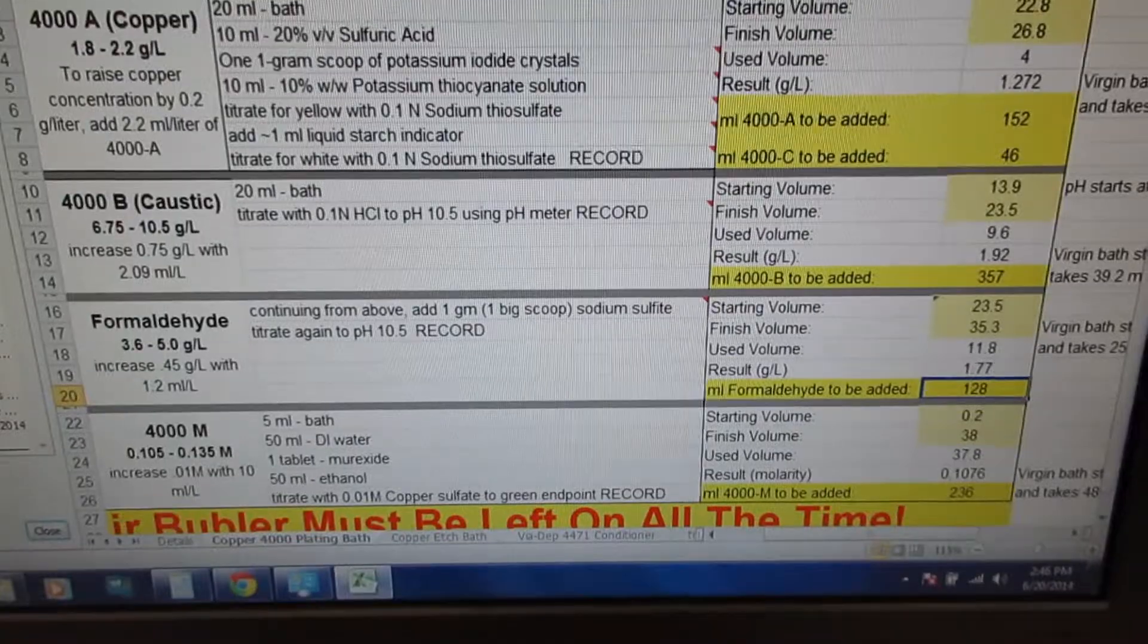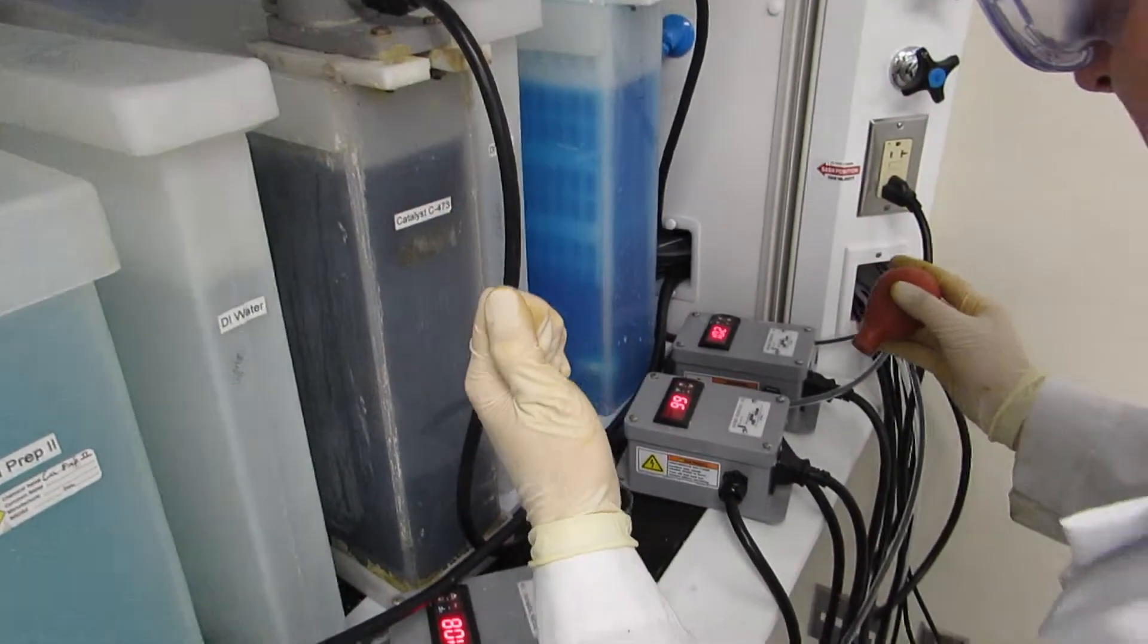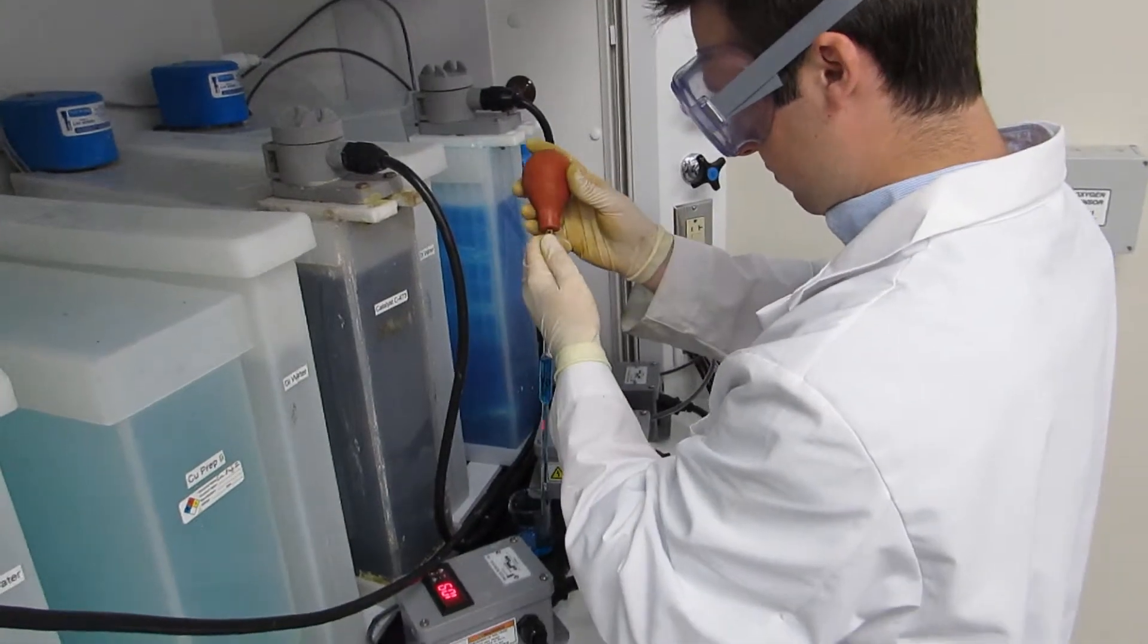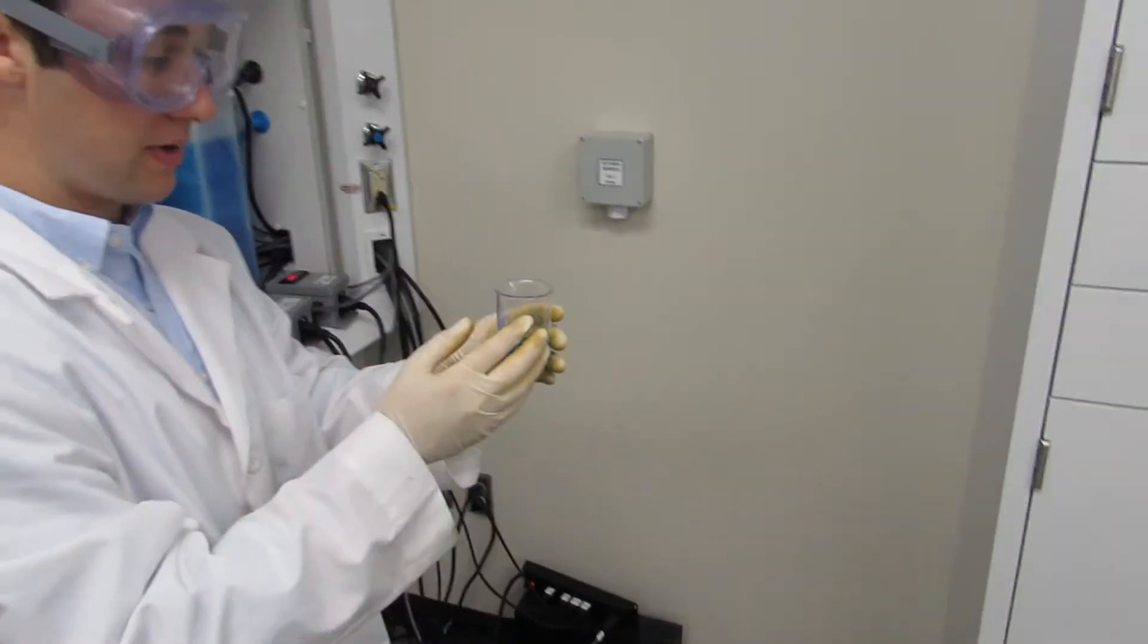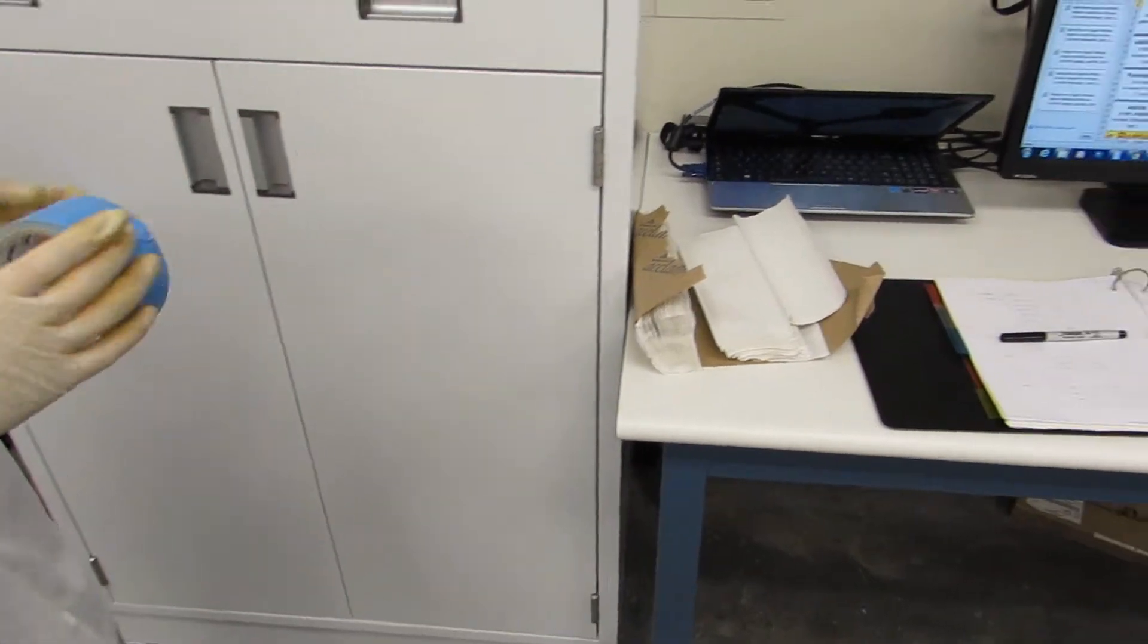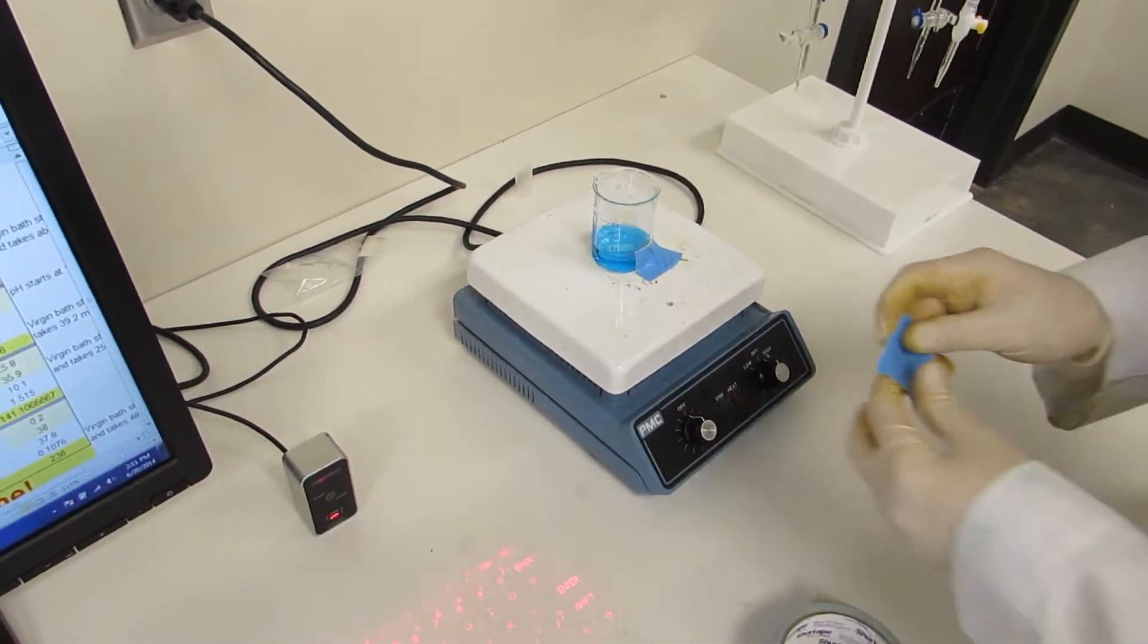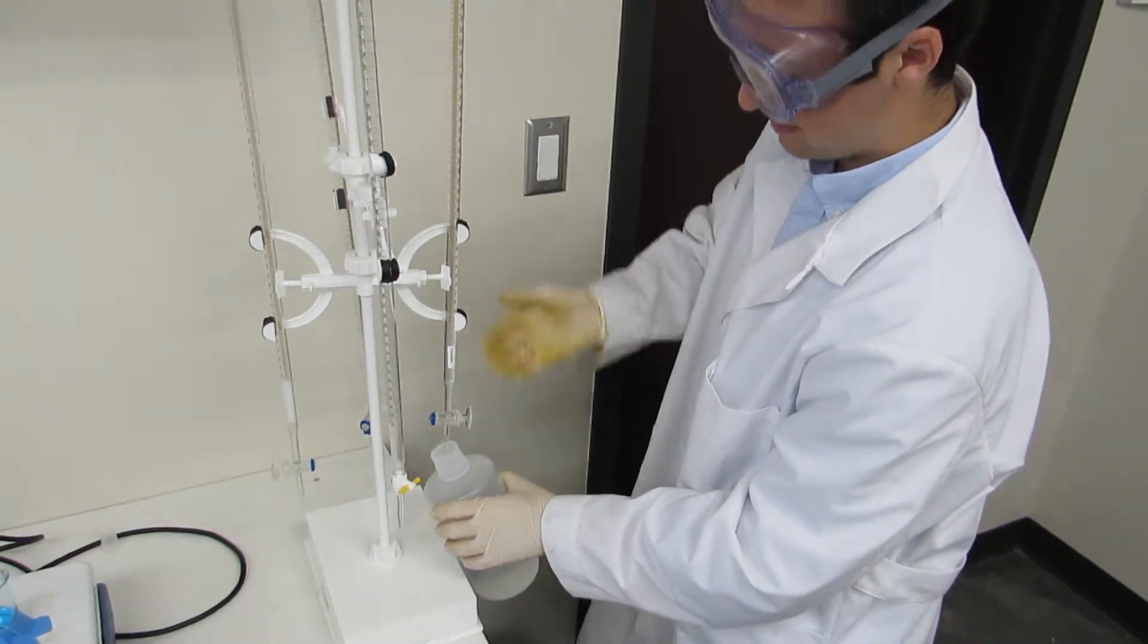Now we start titration step number 2 and we take another 20 milliliters bath. And in this step we use this smaller beaker for reasons that will become apparent very soon. Now we need to take out some tape from the cabinet. Electrical tape is preferred but this will do just fine. And you will want to tape down the beaker to the stir table. Now we need to remove thiosulfate from the first titration. We have to empty it back out into the bottle.